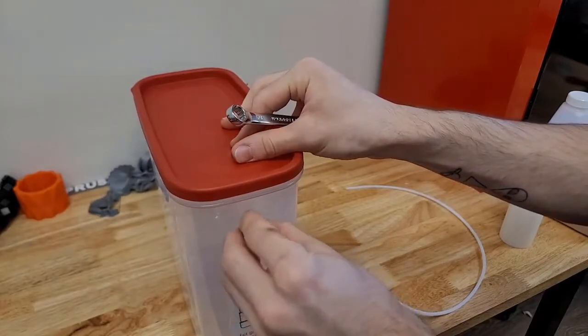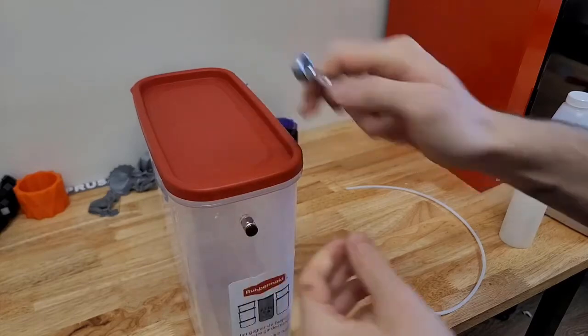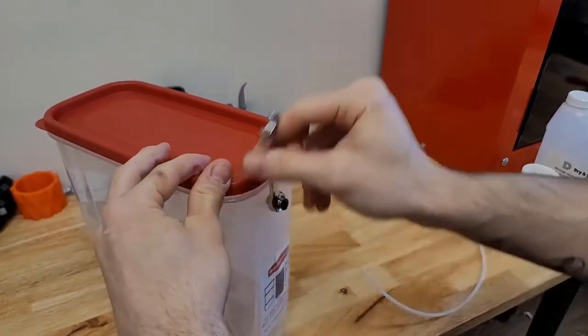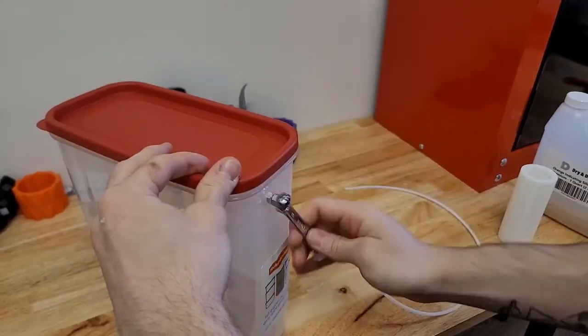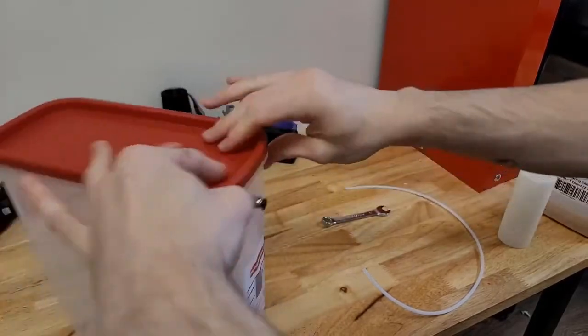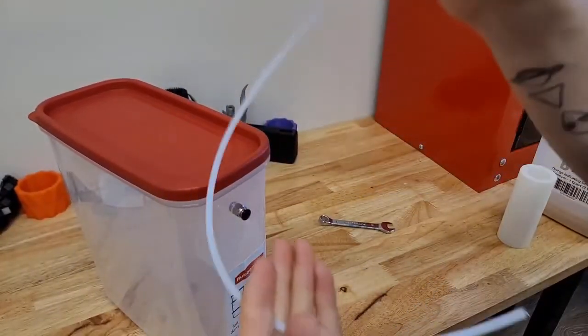After that, you're going to get your coupler threaded in by hand. Pretty simple process. Make sure it just goes in straight. Then get your wrench and just kind of wrench it down. Don't over-tighten this because you will start chewing up the plastic and it'll get looser and looser. Then it'll eventually fall out.